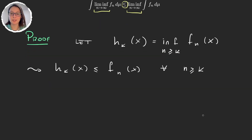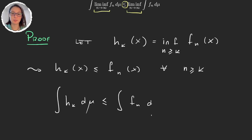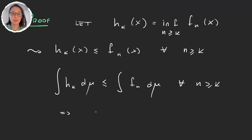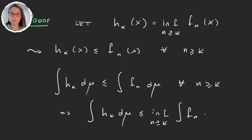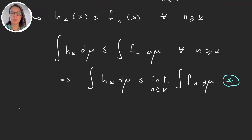Because we have this, we can integrate on both sides and get that the integral of h_k dμ is less than or equal to the integral of f_n dμ, for every n greater than or equal to k. We have these inequalities valid for all these n's, and in particular then the integral of h_k dμ is less than or equal to the infimum of these integrals, because it's smaller than all of them. Let's call this equation (*) — it's going to be useful in a few minutes.